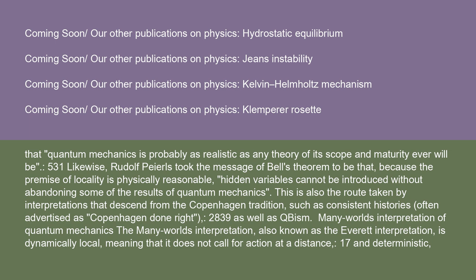Likewise, Rudolf Peierls took the message of Bell's theorem to be that, because the premise of locality is physically reasonable, hidden variables cannot be introduced without abandoning some of the results of quantum mechanics. This is also the route taken by interpretations that descend from the Copenhagen tradition, such as consistent histories — often advertised as Copenhagen done right — as well as QBism.